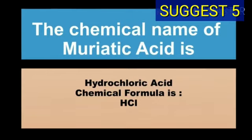The chemical name of muriatic acid is hydrochloric acid and chemical formula of muriatic acid is HCl.